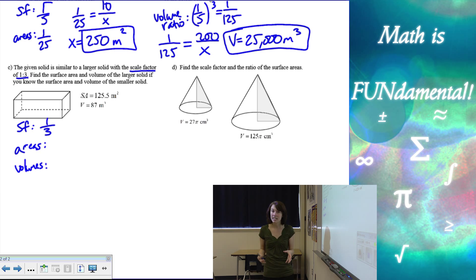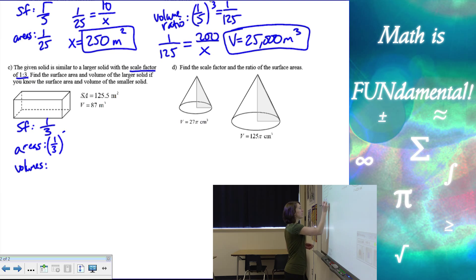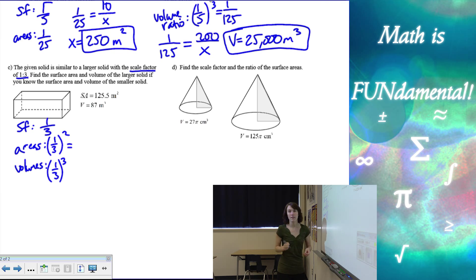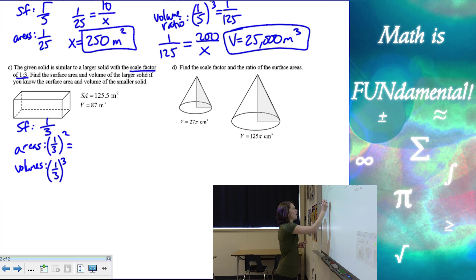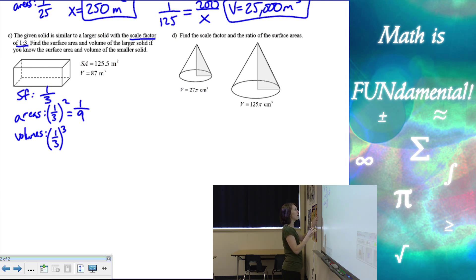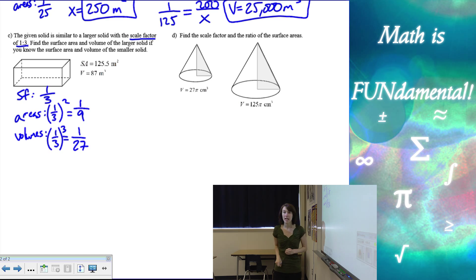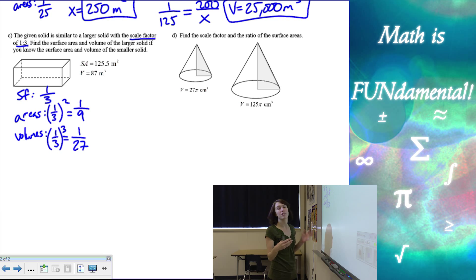So we take our scale factor and we square it to get the area ratios, and we cube it to get the volume ratios. My area ratio is one to nine. My volume ratio is one to 27. And I'm going to use these respective ratios to find the surface area and the volume.